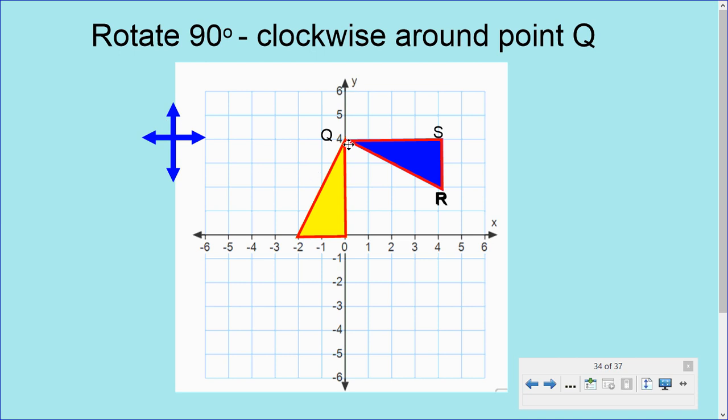So point Q is fixed there. And if we check the distance from Q to our S prime, let's count the distance. We noticed it was four boxes going across. So now we're going 1, 2, 3, and 4. So there it is. And we can even check point R prime. And it is located across from point S, 1, 2 boxes.